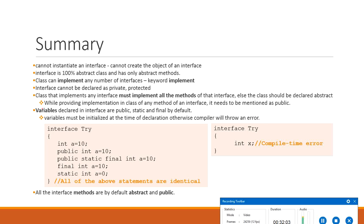Consider using interfaces in these situations: if you expect unrelated classes to implement your interface — for example, interfaces like Comparable and Cloneable can be implemented by many unrelated classes; if you want to specify behavior of a particular data type without being concerned about who implements it; and most importantly, if you want to use multiple inheritance, then you must create an interface.